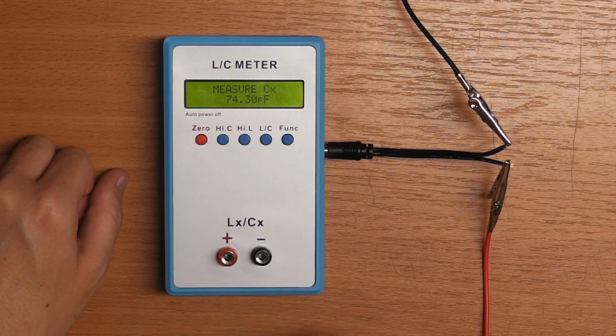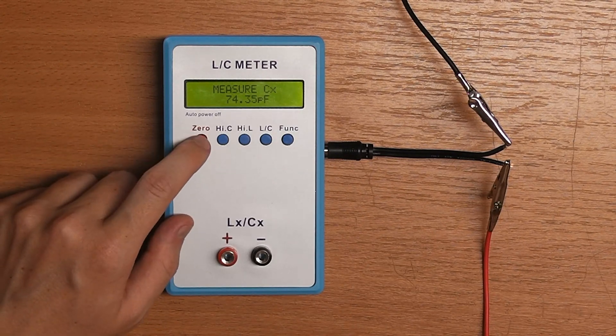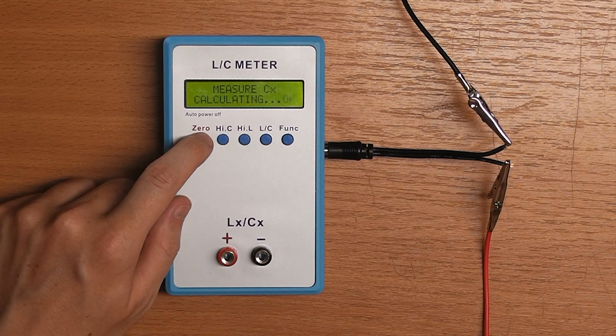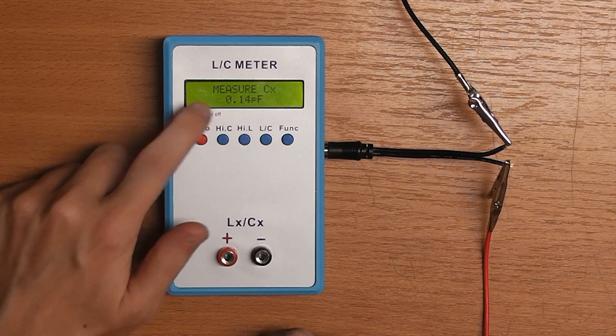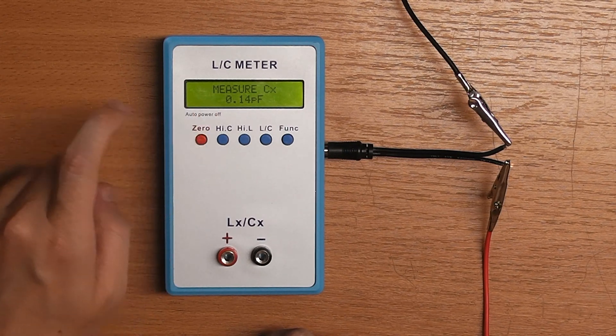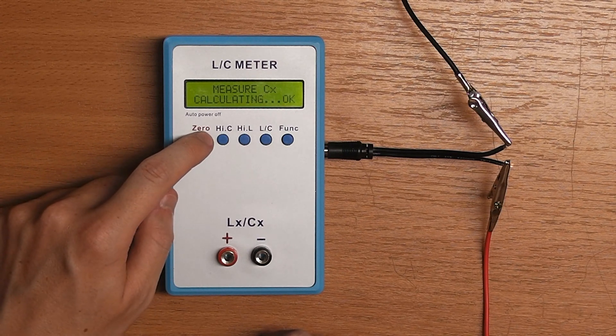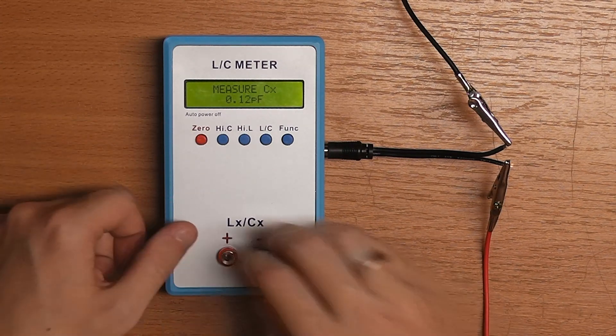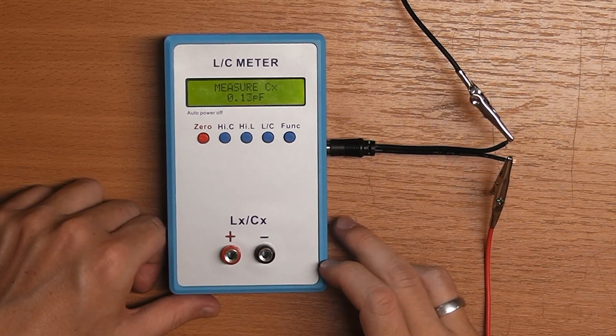You see that it currently has an error of about 74 pF. If I press this zero button, it will say calculating and if it says OK and I release it, it will have zeroed out the error. So currently it's at 0.15 pF error. Usually you do that after you connect your leads and everything to cancel out the measurement error that is caused by the leads.